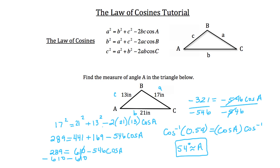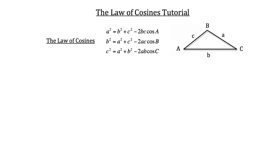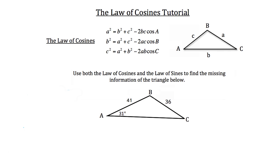Now let's take a look at a problem where you're given one angle and two side lengths. In this problem, use both the Law of Cosines and the Law of Sines to find the missing information of the triangle below. We know angle A and side length a, and we also know side length c. So we can use the Law of Sines to calculate angle C: sine of A over side length a, which is 36, equals the sine of angle C over side length c, which is 41.